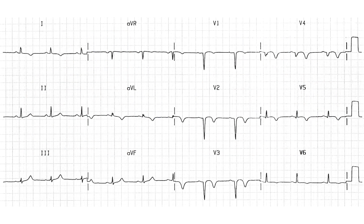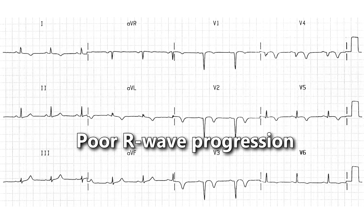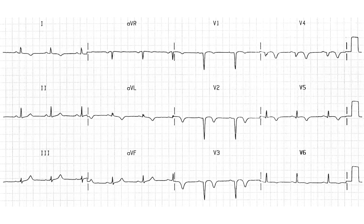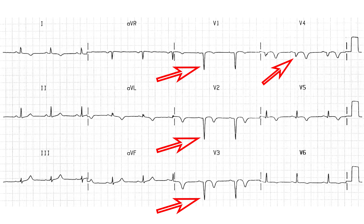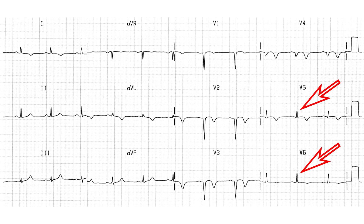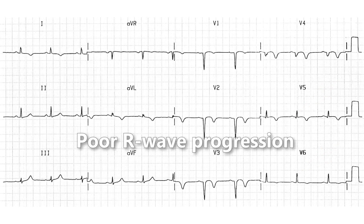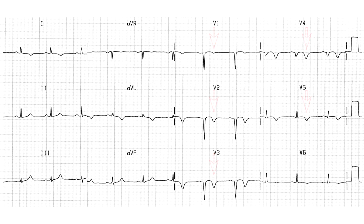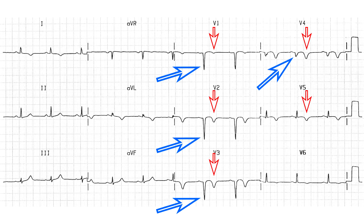If the height of R wave is not increasing gradually as we move from leads V1 to V6, it is called poor R wave progression. This is an ECG of a person who has a history of myocardial infarction. Focus on R wave as we move from leads V1 to V6 — from V1 to V4, only downward deflections of Q waves are present, and R waves are completely absent. R waves appear only in V5 and V6, so this ECG shows poor R wave progression. Also notice that T waves are inverted in the chest leads. These Q waves and inverted T waves are characteristic of people with a history of myocardial infarction.